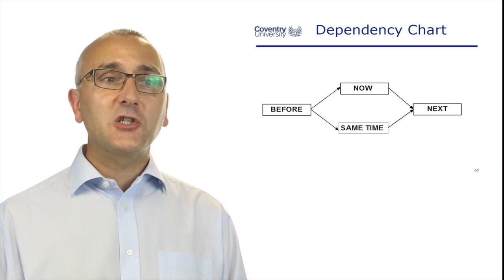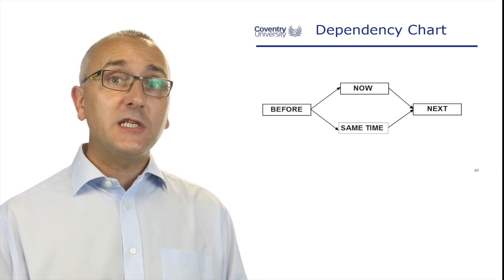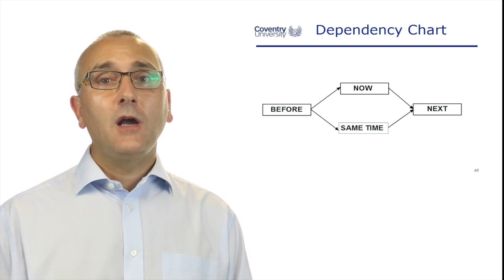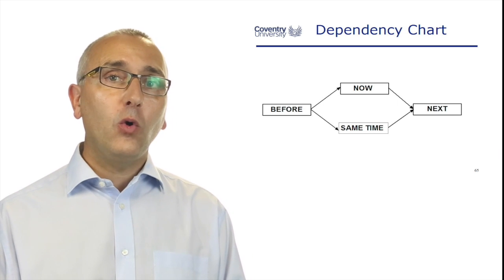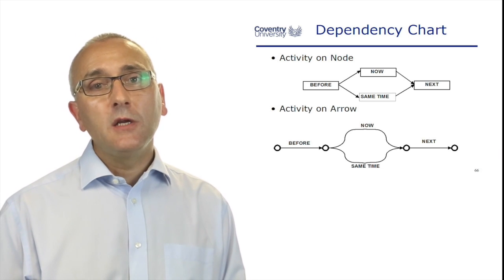The dependency chart shows what happens first, what happens concurrently or sequentially, and what comes afterwards. It's the sequence of tasks through the project. When you look at project management books, there are two main ways of doing this.